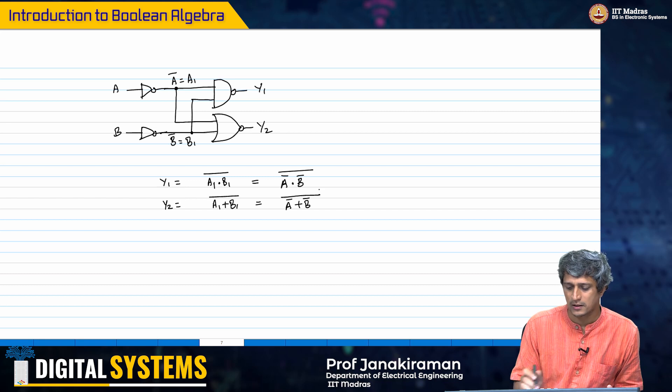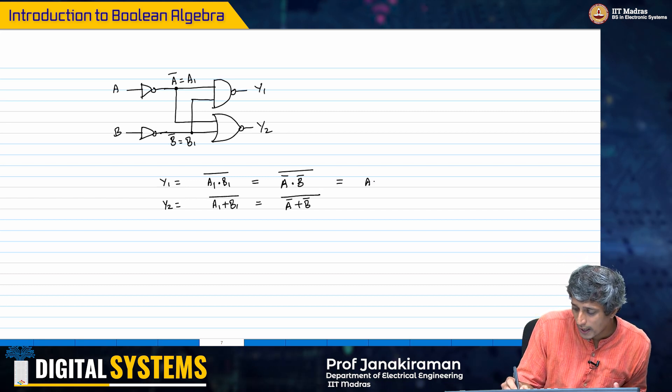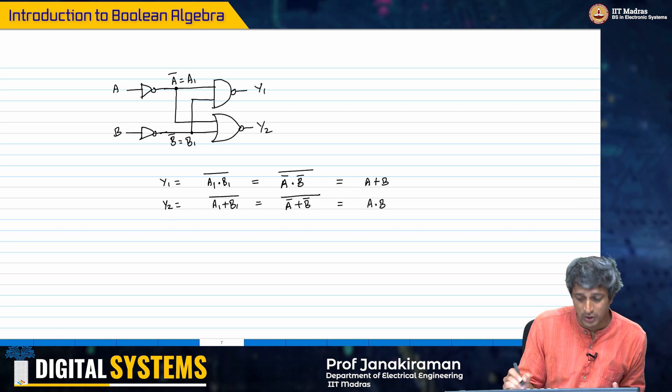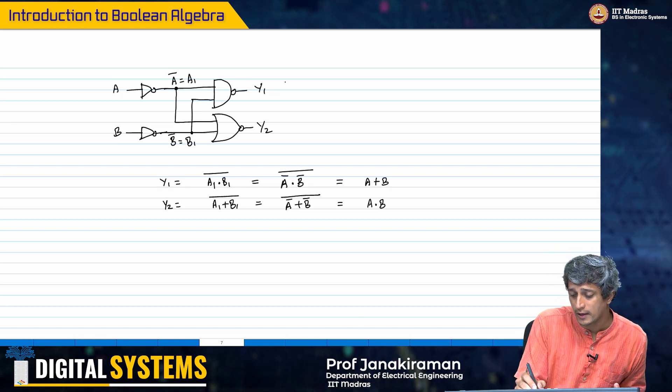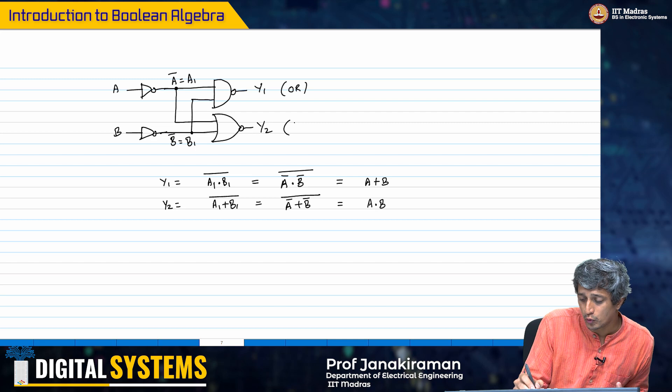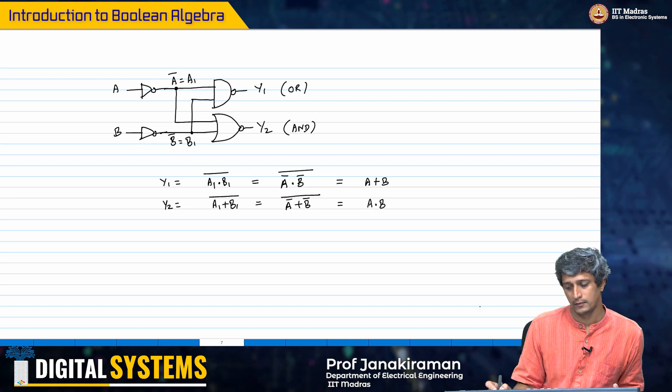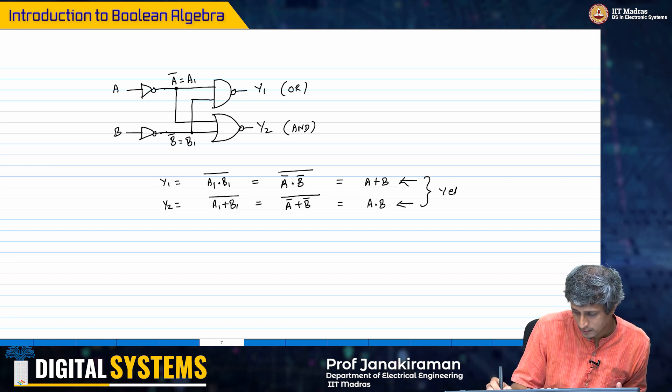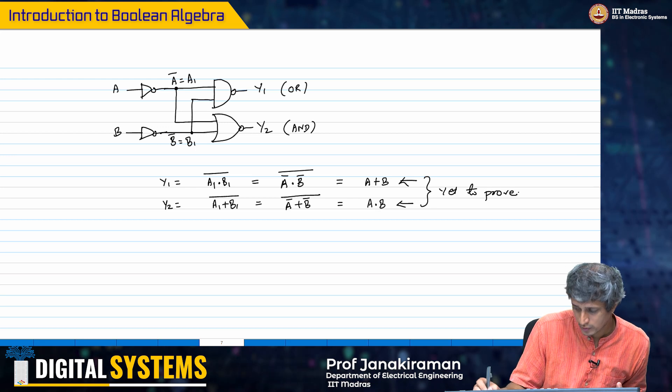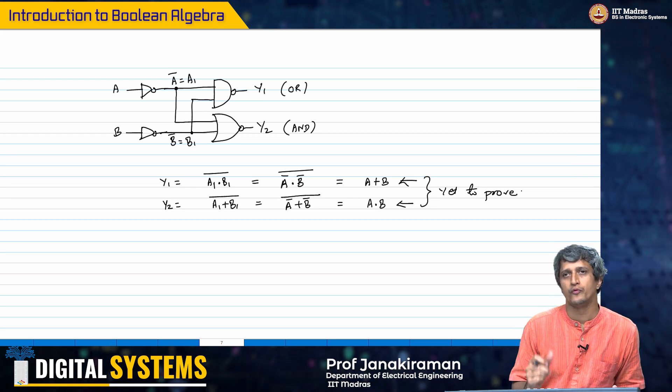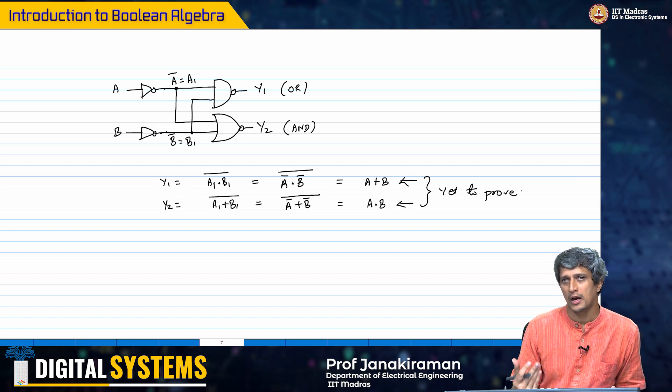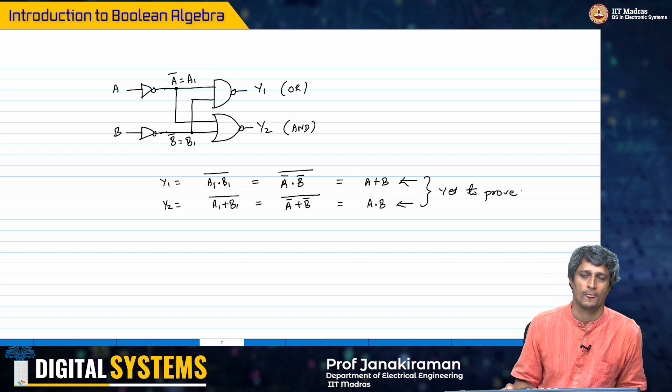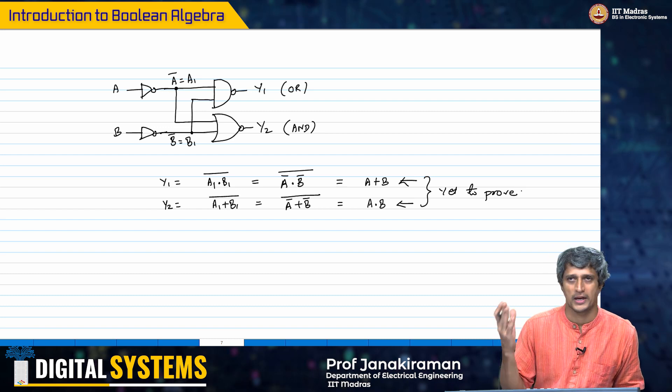What remains to be seen is how did this reduce to a or b and how did this reduce to a into b, because we said y1 was effectively the OR gate and y2 was effectively an AND gate. This we are yet to prove. In order to prove this we need the postulates of Boolean algebra and the rules of Boolean algebra for us to simplify this particular expression, which is what we are going to look at in the coming lectures. Thank you.